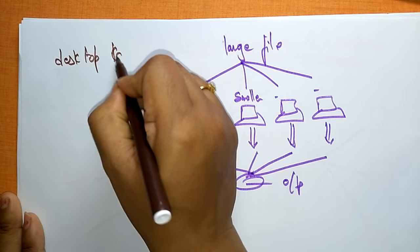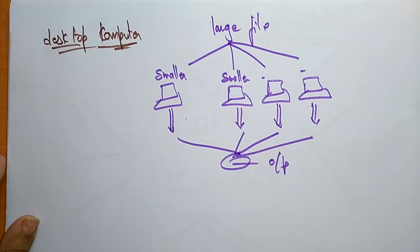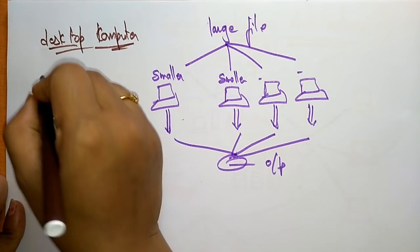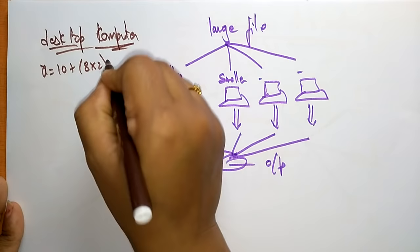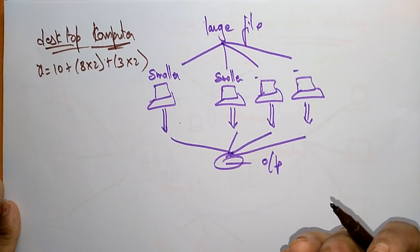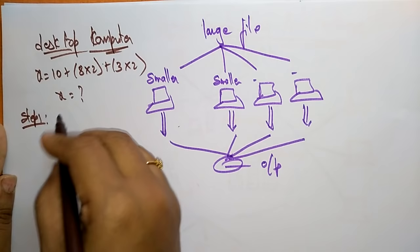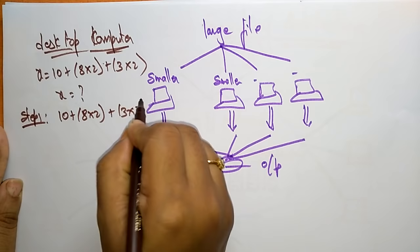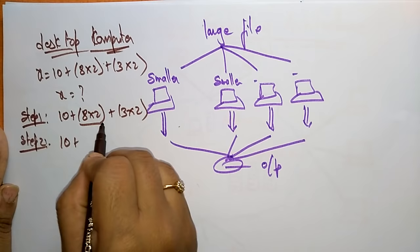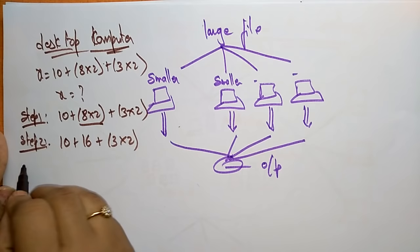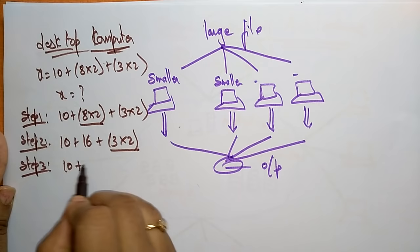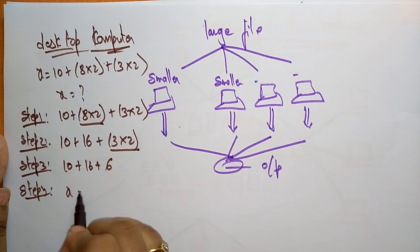Consider the equation: x = 10 + 8×2 + 3×2. On a desktop computer, it executes step by step: first calculates 8×2 = 16 and 3×2 = 6, then computes 10 + 16 + 6, and finally gets x = 32.